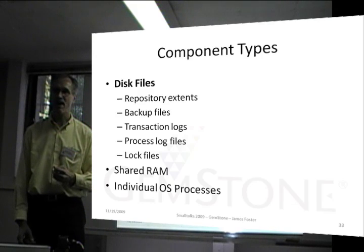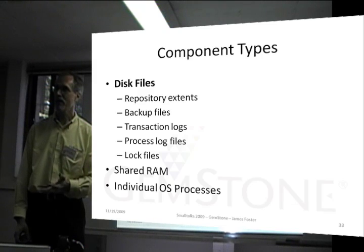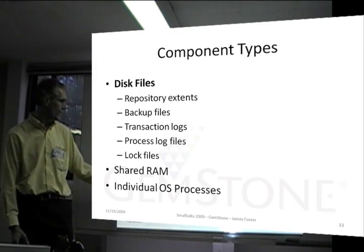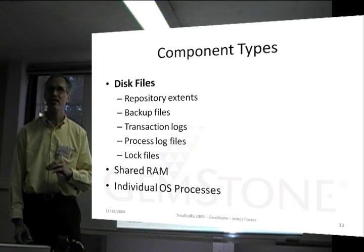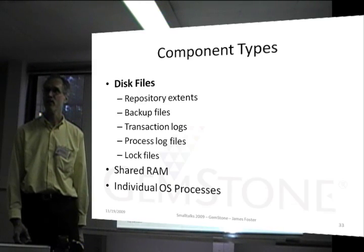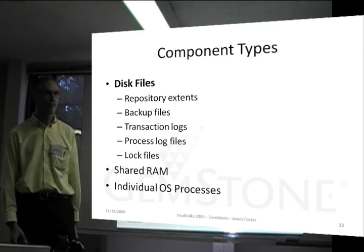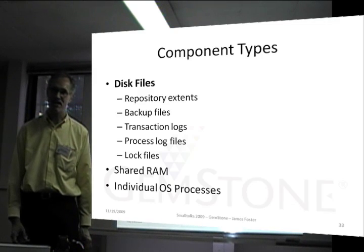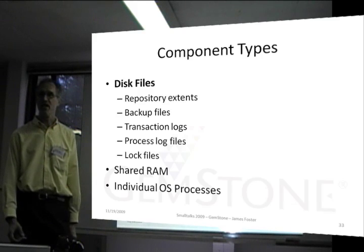With that transaction log file, we have something we can replay to get the database back if it crashes. Then there are log files that are text files that simply describe what's happening in the system, so we can read the log files if there's a problem we want to investigate. These are log files for processes — not for actual objects, but process log files. Those are examples of things that are on disk.